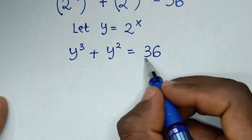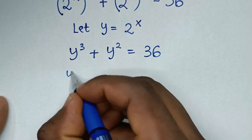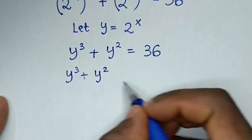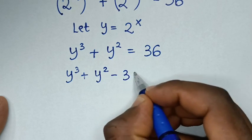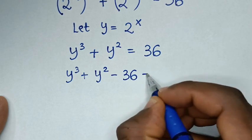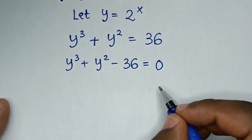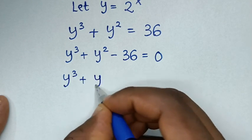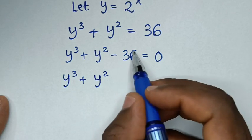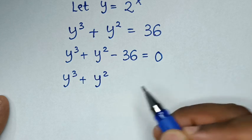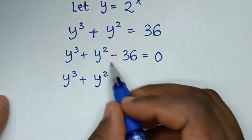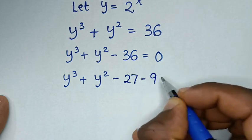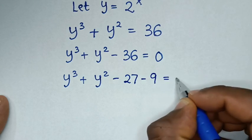Then we'll take 36 to the left side, so it will be y cubed plus y squared minus 36 is equal to 0. The minus 36 will split according to the two exponents, so minus 36 is the same as minus 27 minus 9, giving us zero.